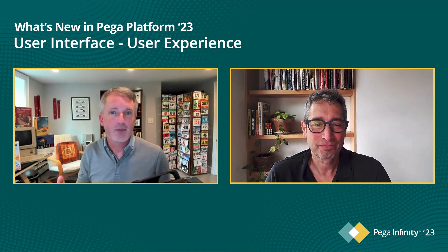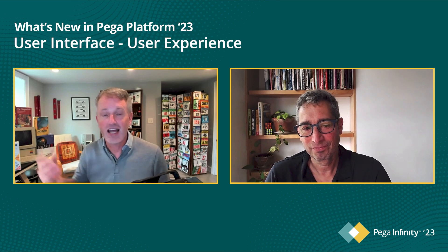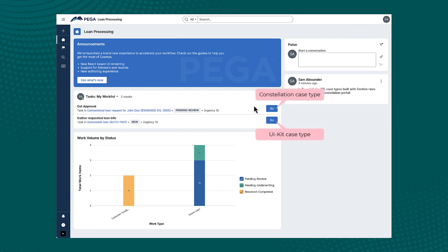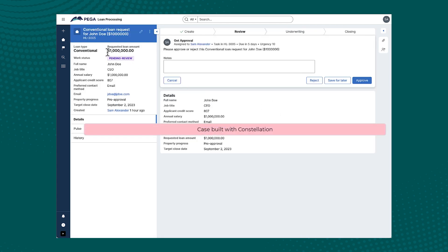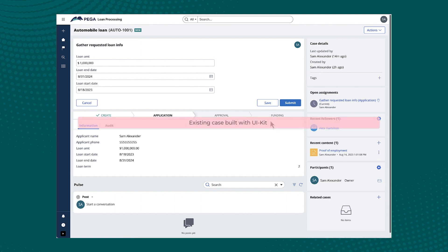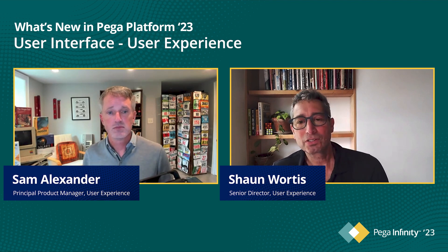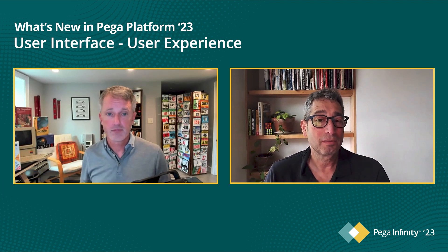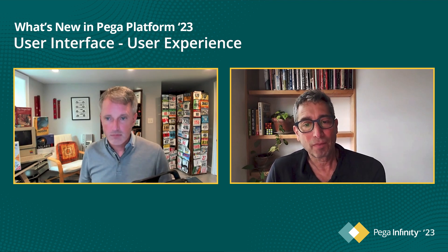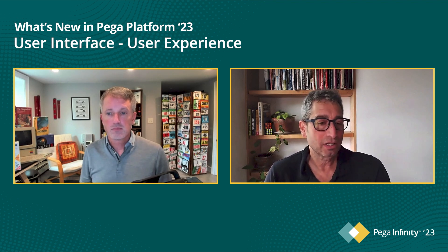There's one more thing: in Infinity 23 you can now run existing Pega case types built with UI Kit and section rules inside a Constellation portal - or the reverse, build new Constellation case types in your existing traditional portal. This allows you to move to Constellation at your pace and using the resources you have available. If you move your existing case types into a new Constellation portal, you might get immediate advantages such as semantic URLs, faster portal performance, and navigation.